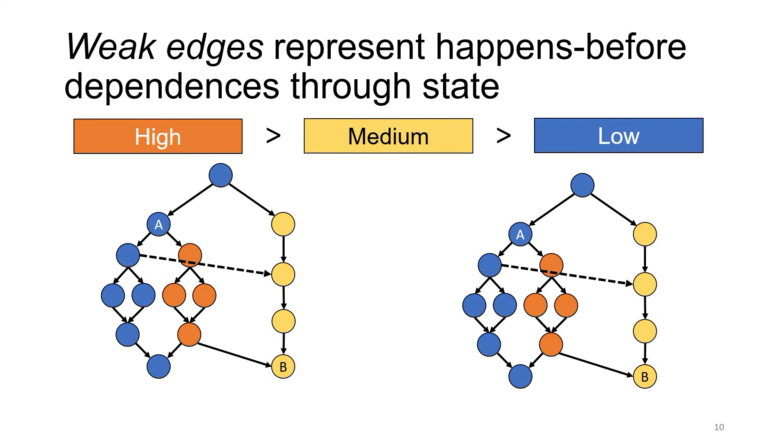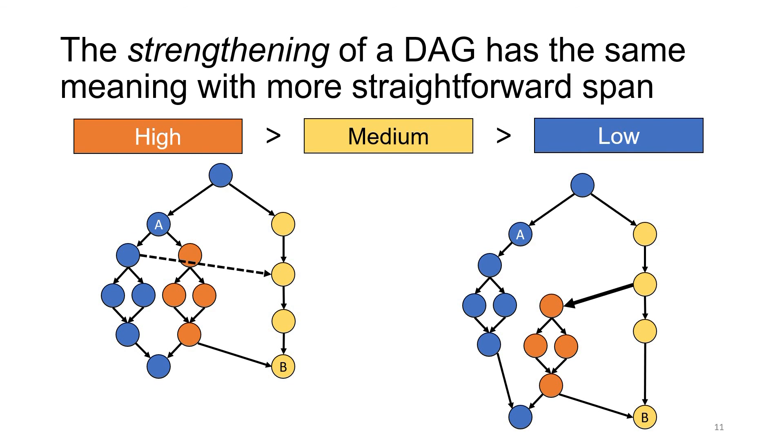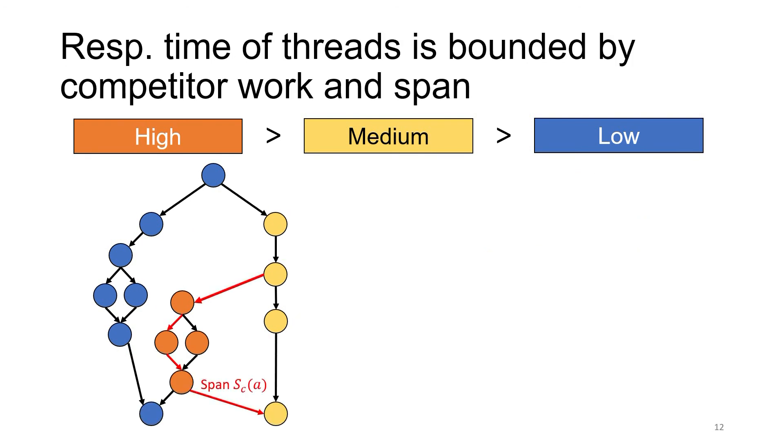The way we do this is by constructing what we call a strengthening of a DAG. This constructs a DAG with no weak edges that correspond to the worst case implied by the weak edge. In this DAG, the worst case would be that the high-priority thread doesn't start running until the same time as the read. For simplicity, let's be slightly more conservative and assume it starts right after the read. We can represent this with a normal non-weak edge from the reading vertex to the start of the high-priority thread. At this point, both the weak edge and the existing incoming edge are redundant, so we can remove them. This gives the strengthening of the DAG. It has the same worst case, but the span of its threads is more straightforward to calculate. In particular, there are now no low-priority vertices on the span of the medium-priority thread.